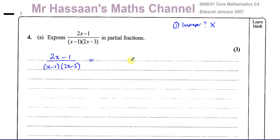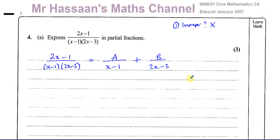In this case, we don't have to worry about that. We can split it straight into two separate fractions with a constant A over the first linear factor, plus another constant B over the second linear factor. Now what we need to do is find the values of A and B. To do that, we multiply both sides by the LCM of the denominators, which is (x minus 1)(2x minus 3).